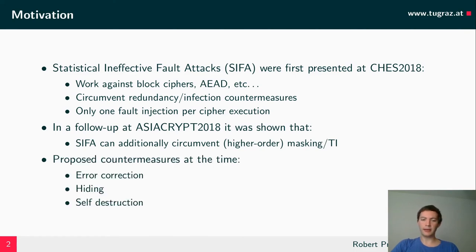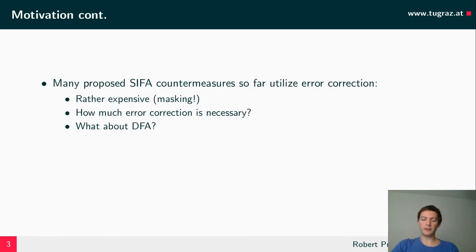At the time, the proposed countermeasures involved using some kind of error correction, a lot of hiding, or just self-destruction. Since then, many papers proposed different trade-offs utilizing error correction, but they turned out to be rather expensive, especially when combined with masking. It was also not clear how much error correction is actually necessary to provide practical protection, and whether these countermeasures also deal with DFA attacks, which you probably also want to protect against in practice.